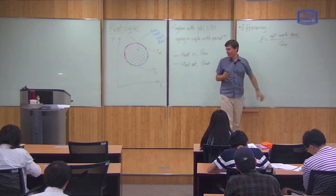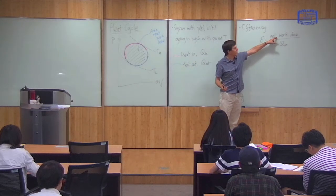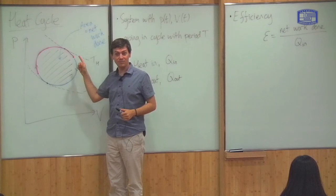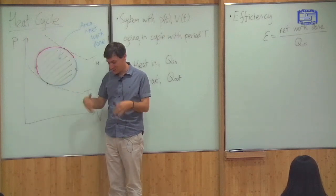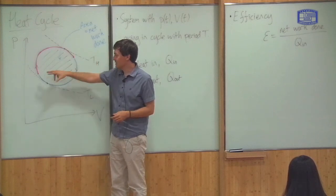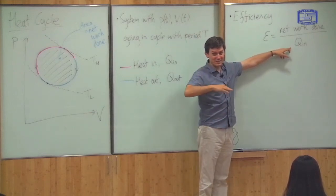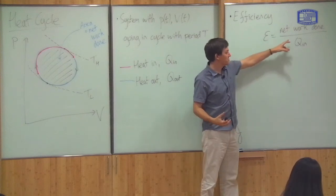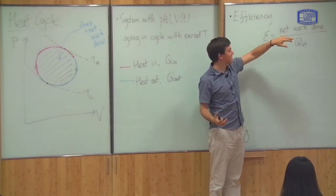Why do we define efficiency this way? Imagine this is a machine — you want it to do work, to produce as much energy as possible, so you want the work done to be as high as possible. Q_in is the amount of heat you have to put into the system — in a steam engine that's by burning coal; in a car, heat is generated by combustion of gasoline. This is the amount of energy you have to produce as heat to make the thing work, so you want to make it as small as possible. In a good engine it should do a lot of work for a small amount of heat, so a good engine will have a high efficiency.